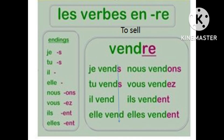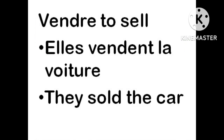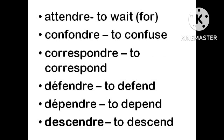Next is the third group verb, RE. Some of the RE verbs have the same endings: S, S, —, ONS, EZ, ENT. For example, vendre, which means to sell — remove the RE and apply the ending. For example, Ils vendent la voiture — they sell the car. Some RE verbs which follow the same pattern: attendre, confondre, correspondre, défendre, dépendre, descendre.